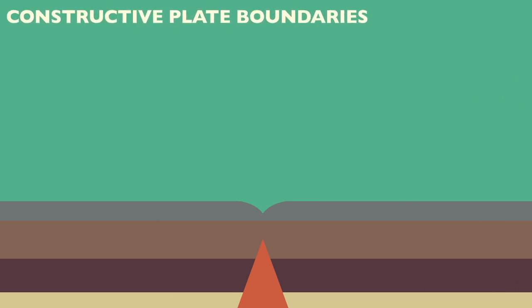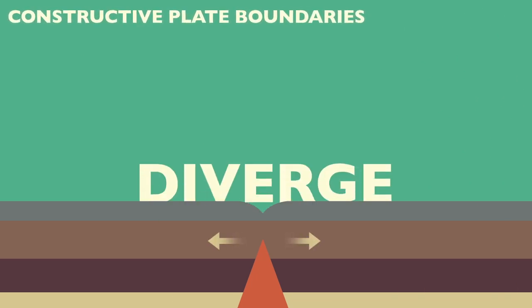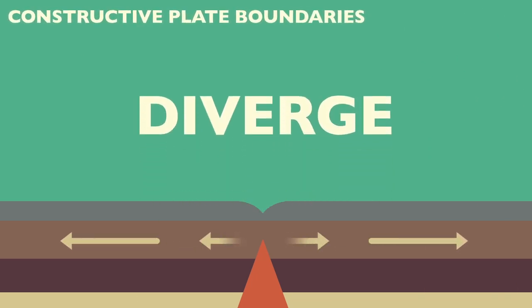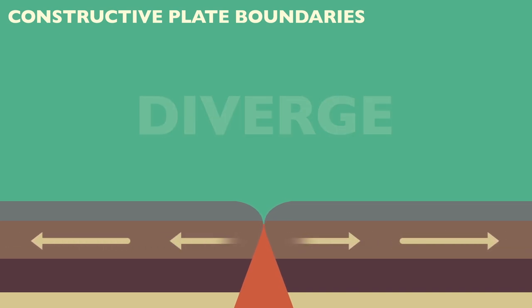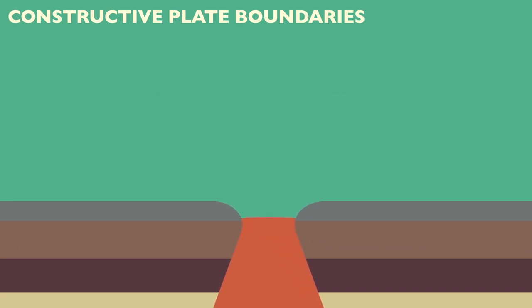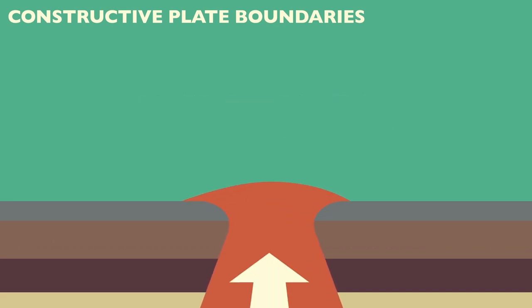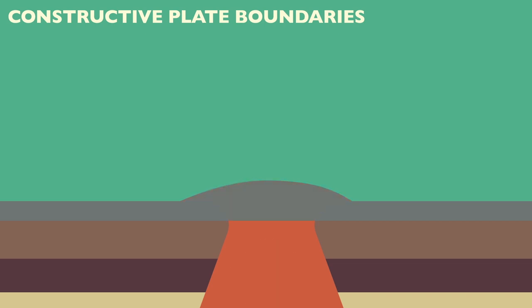At constructive plate boundaries, tectonic plates diverge or move apart from one another. As they move apart, molten rock rises and erupts from the mantle, before cooling and hardening into solid rock.